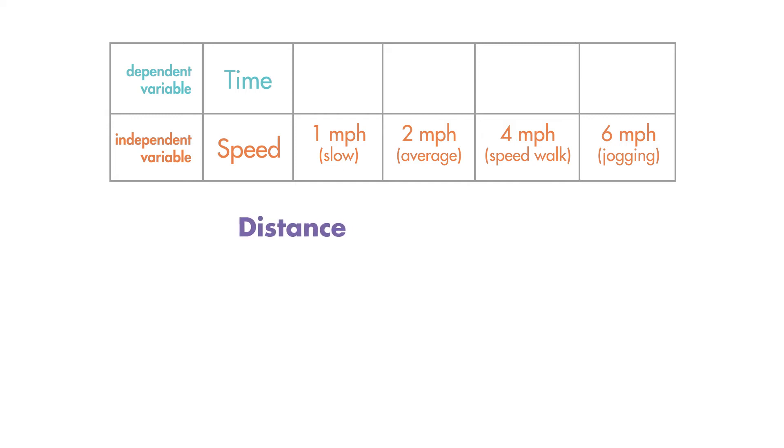We can calculate the time it takes for the hike based on different speeds, such as 1, 2, 4 and 6 miles per hour. We will use the equation, distance is equal to speed times time.